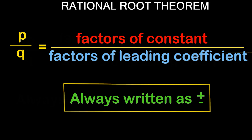In order to do that, you're going to take factors of your constant over factors of your leading coefficient. That's identified as p over q, where p represents factors of your constant and q represents factors of your leading coefficient. These are always written as plus or minus, because we're talking about factors of the polynomial. Let's go ahead and look at our first example because it'll make a lot more sense once we go through the problem.